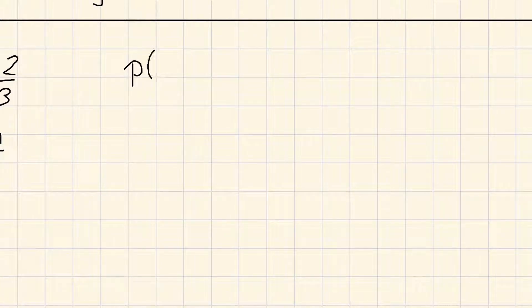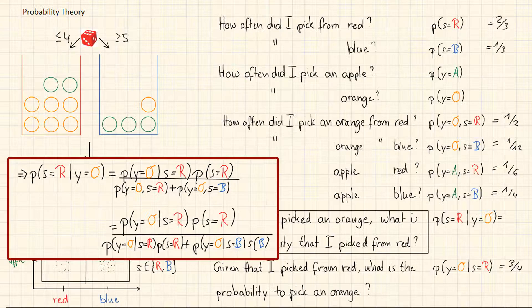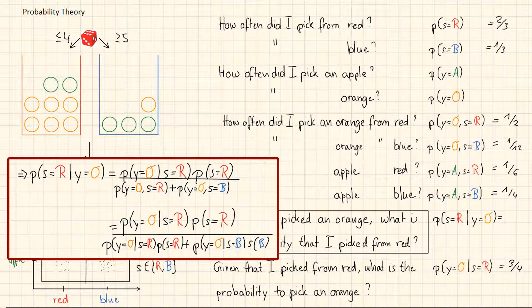So, okay, we have now p of s is equal to r given y is equal to o. This is the one conditional probability that we want to get. And we just plug in the probabilities from Bayes' rule. So, we have p of y given s. p of y equals orange given s equals red. We calculated this to be 3 over 4.